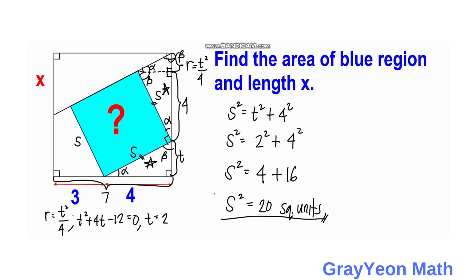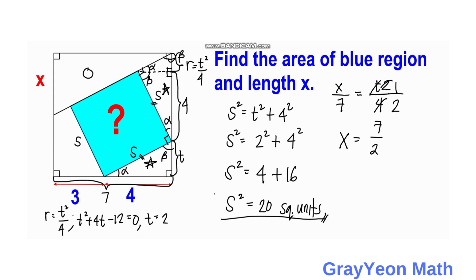Next, we solve for the value of x. Since the larger right triangle is similar to the smaller right triangle, we set up the proportion: x over 7 equals t over 4. Since t equals 2, we have x over 7 equals 2 over 4, which simplifies to 1 half. Cross-multiplying gives x equals 7 over 2 units.